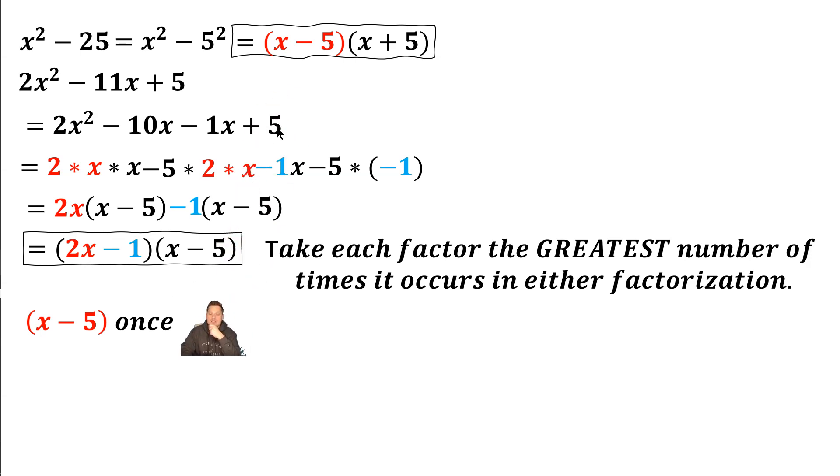Then you look at the next part, which is x plus 5. As you can see, this factorization has x plus 5, but this one doesn't have x plus 5. So the greatest number of x plus 5 binomials that you see is once. So down below, I'm going to put it down one time.